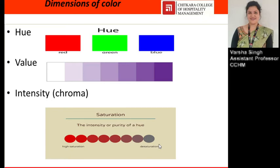The second dimension of color is value. Value indicates the lightness and darkness of a particular color. For example, red color can become light pink or it can become dark maroon — meaning from light to dark, from lightness to darkness.